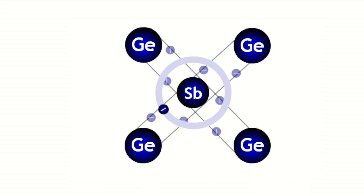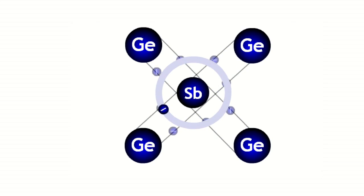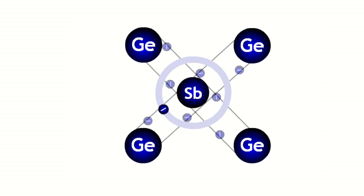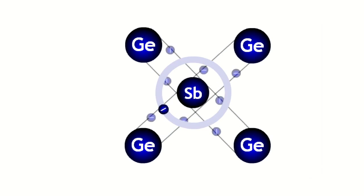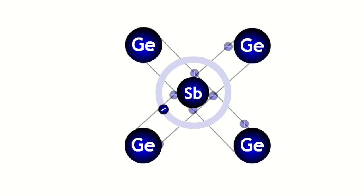Conductivity by free electrons that occur due to impurities is called impurity electron conductivity. Electrons primarily migrate in semiconductors containing donor impurities, and they ensure current flow. Holes are primarily fixed. Such semiconductors belong to N-type semiconductors.